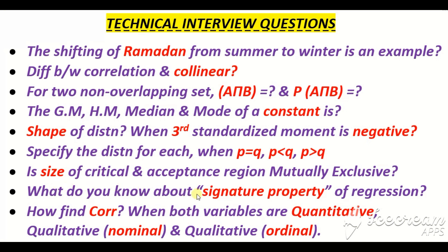What is the signature property of regression? This is a very important question. One property of regression coefficients is that the geometric mean of the two regression coefficients equals the coefficient of correlation. The signature property plays a role when both regression coefficients — beta_xy and beta_yx — are negative. Mathematically, minus times minus becomes plus, but you must not convert the sign to positive. When both regression coefficients are negative, you multiply their quantities but keep the negative sign outside, securing it with the correlation coefficient. This is called the signature property of regression.